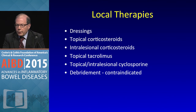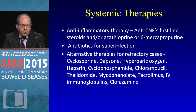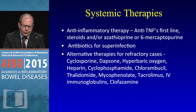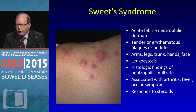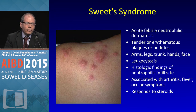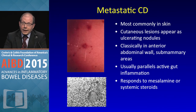Working with dermatologists in your IBD center — just like rheumatologists — is the key. Systemic therapies include steroids and all our standard IBD drugs. Alternative therapies range from hyperbaric oxygen to mycophenolate and tacrolimus. Sweet's syndrome is an acute febrile neutrophilic dermatosis with tender nodules; you have to differentiate it from erythema nodosum. There is leukocytosis with neutrophilic infiltrate on histology, and it can be associated with fever, arthritis, and ocular symptoms. It does respond to steroids.